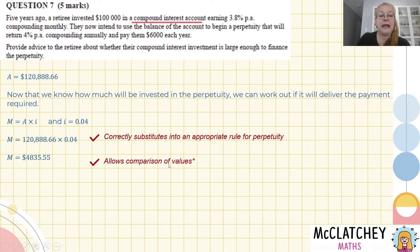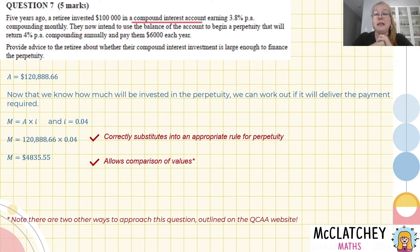Now, you'll notice here, allows a comparison of values. I should note that on the QCAA's website, they have two other ways of actually coming at this problem. So this is a kind of problem that you can get to in a variety of different ways. You could start with the perpetuity, work back to the compound interest. One of the solutions the QCAA has come up with is they've actually worked out what balance you needed to deliver $6,000. So they've done it slightly different to me. This is how I intuitively felt to do it. But notice on the QCAA's marking sheet that because they've allowed a comparison of values, I still get the mark, even though I got there a different way.